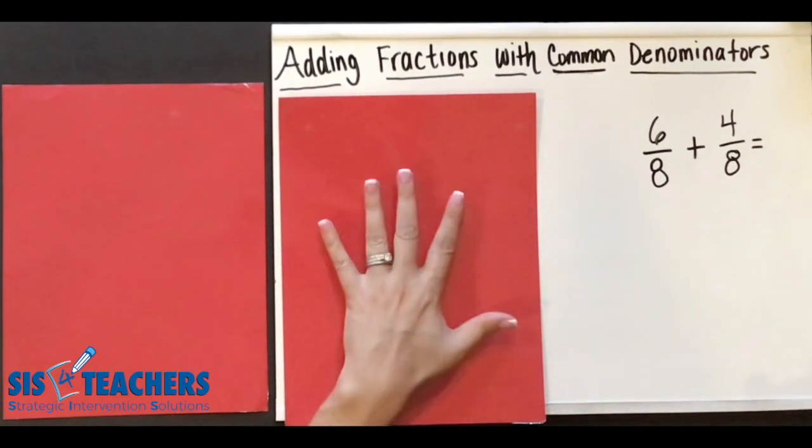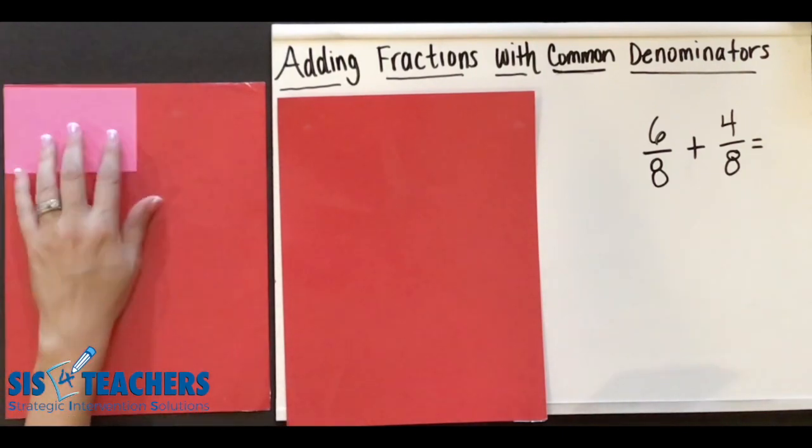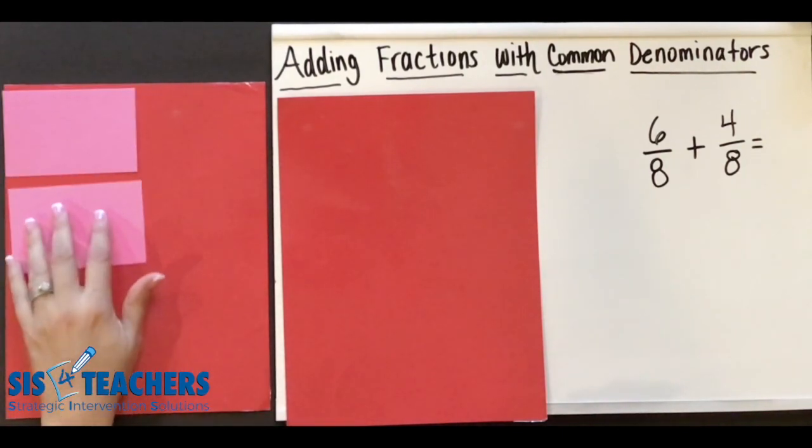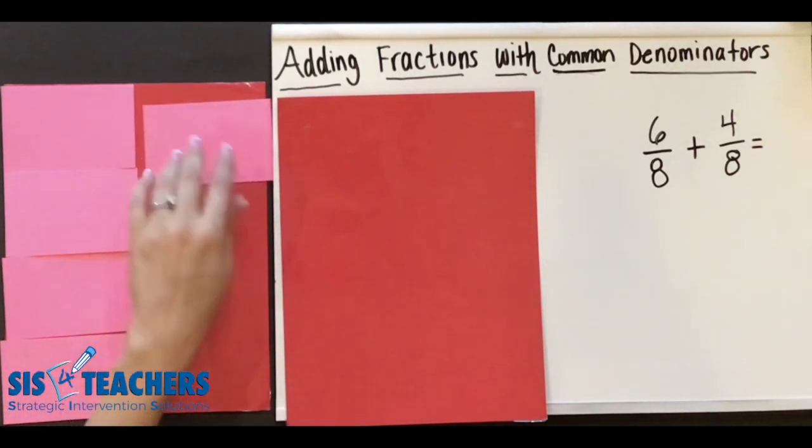So let's try to look at that and see what this even looks like conceptually. I have two red pieces of paper that are going to represent our whole, so I'm going to build on one piece of paper our six eighths. I have one, two, three, four, five, six.